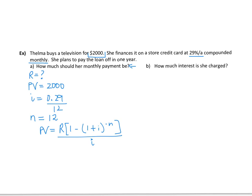So our present value is $2,000 here. Our regular payment is what we're going to solve for. We are going to have 1 plus 0.29 divided by 12, all to the exponent of negative 12. And that is going to get divided by 0.29 divided by 12.